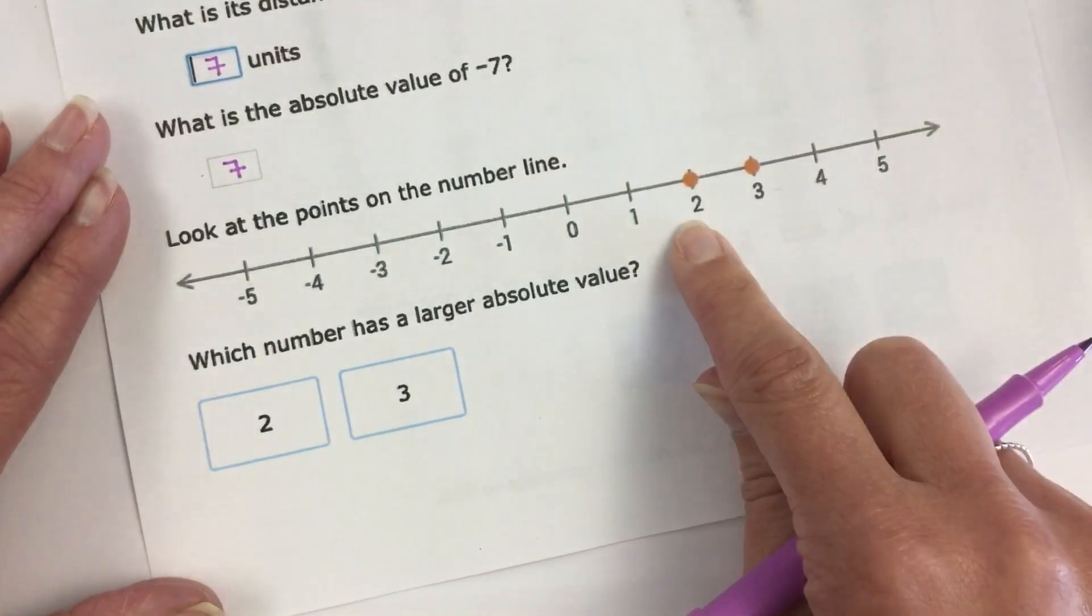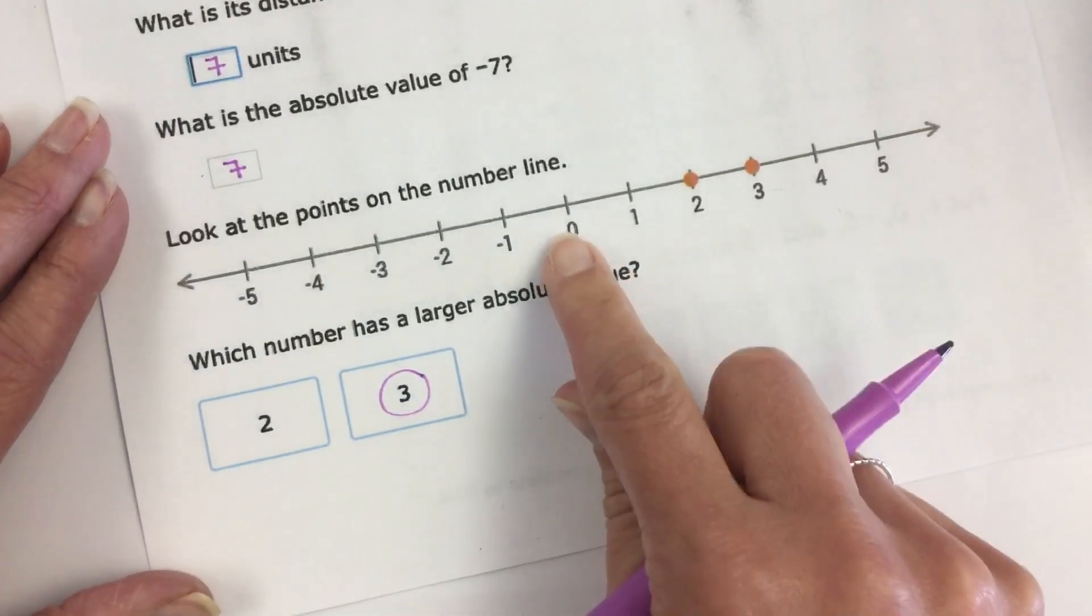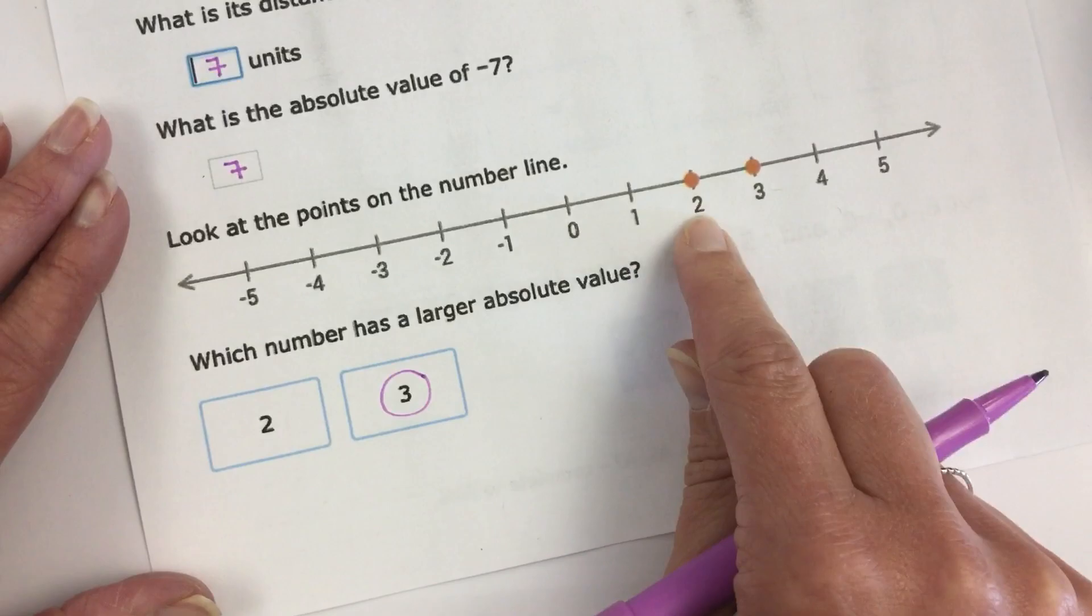So in this case the larger number would be three and that might feel obvious to you, but it is three units from zero and two is two units from zero.